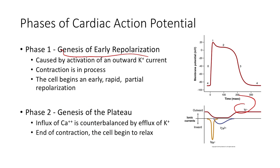Phase two is the genesis of a plateau. We start having an influx of calcium that is counterbalanced by the efflux of potassium. This is the end of contraction, and the cells begin to relax. The influx of calcium is balanced by the efflux of potassium — they balance each other out.